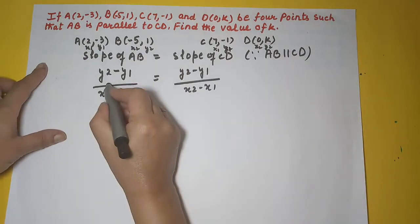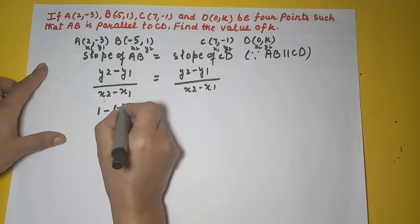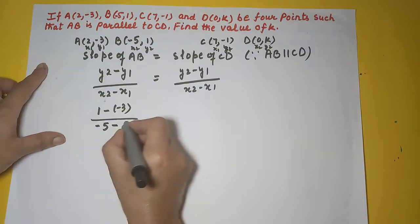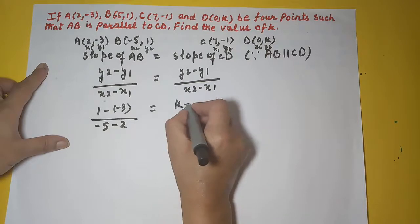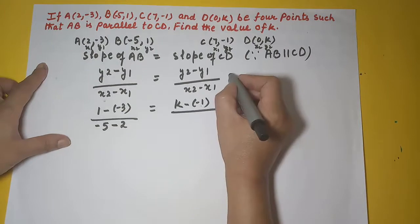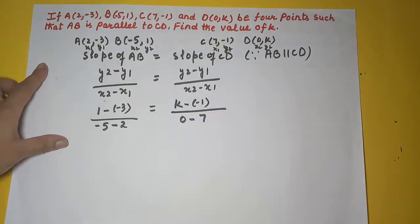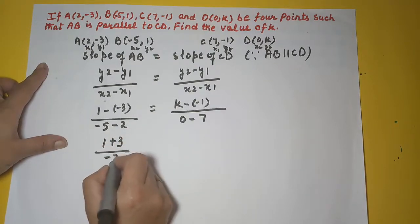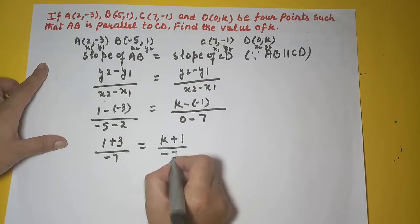So let's substitute the respective values. We have 1 minus minus 3 over minus 5 minus 2 is equal to K minus minus 1 over 0 minus 7. Now this becomes 1 plus 3 upon minus 7 equal to K plus 1 upon minus 7.